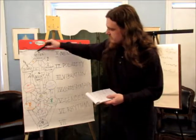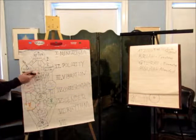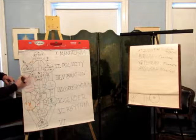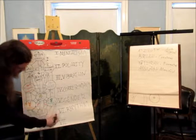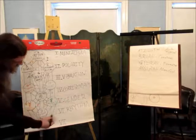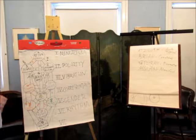We can say that's Atziluth, and that's Briah, that's Yetzirah, or sorry all the way down there, and then that's Assiah. That's one way to do it.